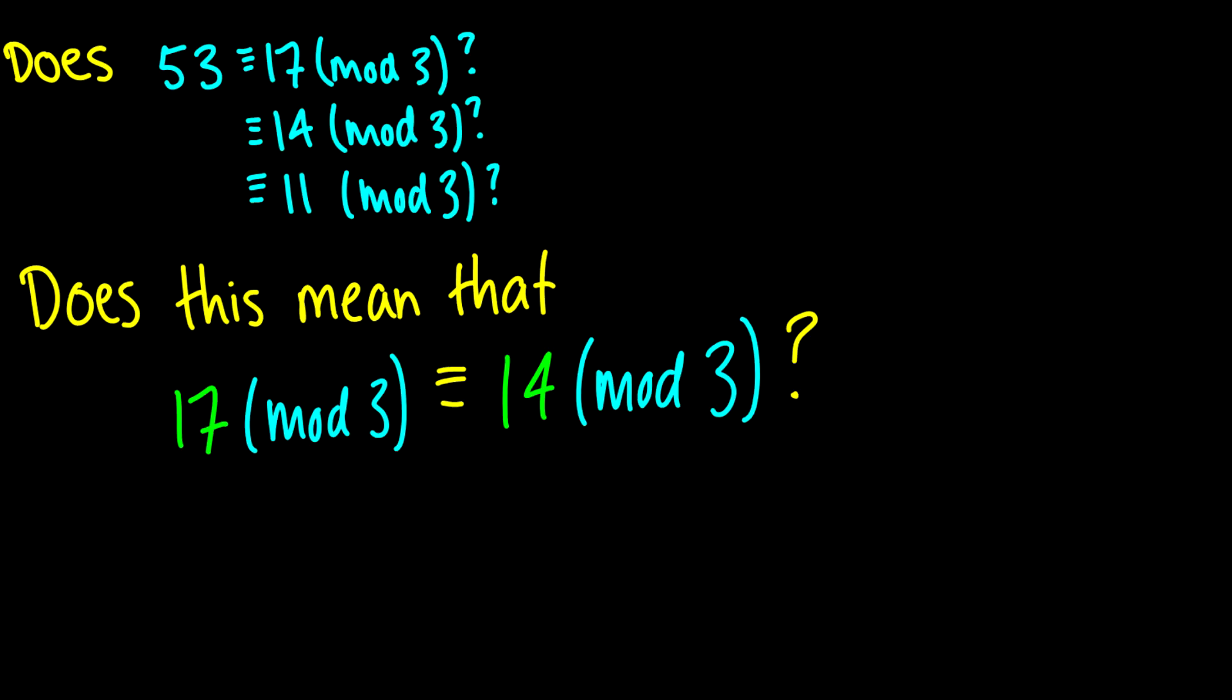Let's take a look at something. Does 53 equal 17 mod 3? We have just 3 divide 53 minus 17. That is to say it is 3 divide 36. And of course, we know that.